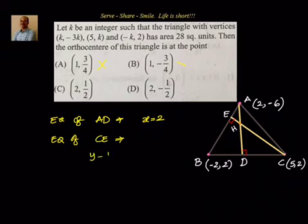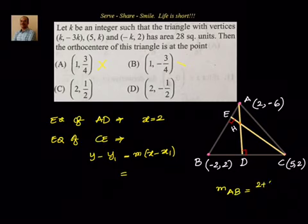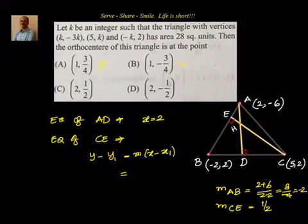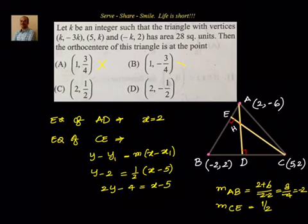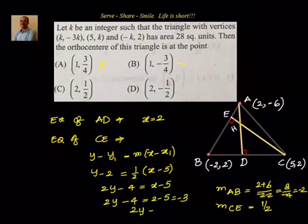For the equation of CE, we use y - y1 = m(x - x1). The slope of AB is (2 + 6) / (-2 - 2) = 8 / -4 = -2. So slope of CE, perpendicular to AB, is 1/2. Using point C: y - 2 = (1/2)(x - 5), which simplifies to 2y - 4 = x - 5. Substituting x = 2: 2y - 4 = -3, so 2y = 1, giving y = 1/2.